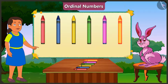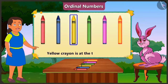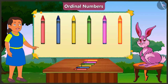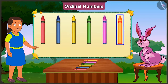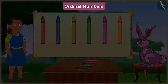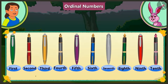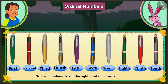Then here the yellow crayon is at the third position, and at the end is the orange crayon. Absolutely right, Bubbly. Ordinal numbers depict the right position or order of anything.